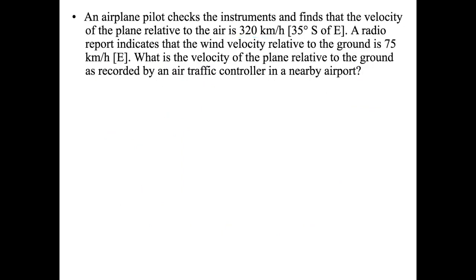An airline pilot finds the velocity of the plane relative to the air is 320 km/h, 35 degrees south of east. A wind report indicates wind velocity relative to the ground is 75 km/h east. We need the velocity of the plane relative to the ground. The formula is: v_plane-to-earth equals v_air-to-earth plus v_plane-to-air.